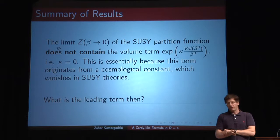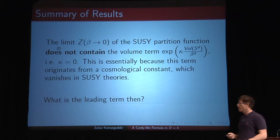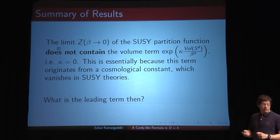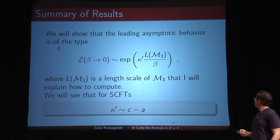What do we know about the limit of such partition functions when the temperature goes to infinity? One obvious thing is that the volume term encountered in general quantum field theory without the minus one to the F is not going to be present. Intuitively, this is because that volume term is associated to some cosmological constant which vanishes in supersymmetric theories, so the asymptotic behavior has sub-leading terms which are interesting to think about.